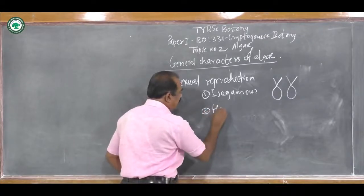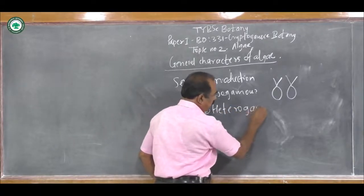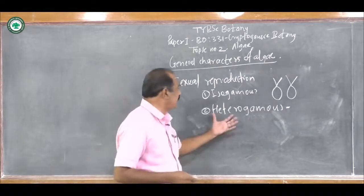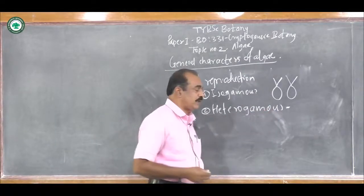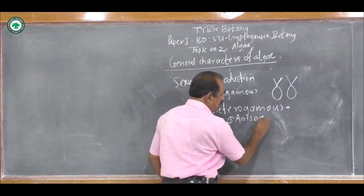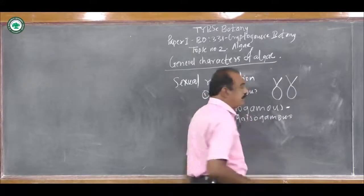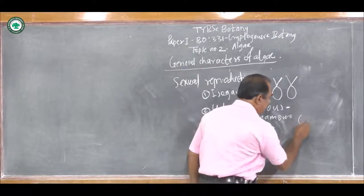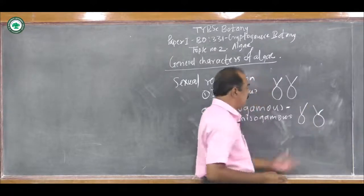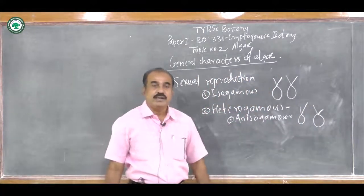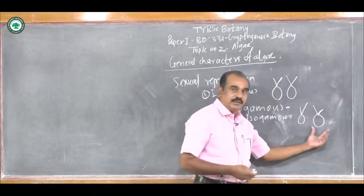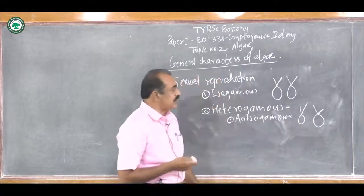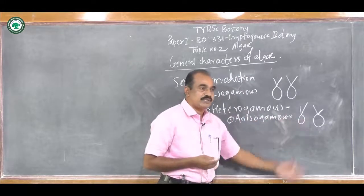Number two is Heterogamous. On the basis of reproductive structures and gametes, Heterogamous reproduction is also of two types. First is Anisogamous. Here, both the gametes are different in their size — their shape is the same but size is different. The male gamete is small and mostly active, while the female gamete is very large and less active. When such gametes unite, that sexual reproduction is called Anisogamous type of sexual reproduction.